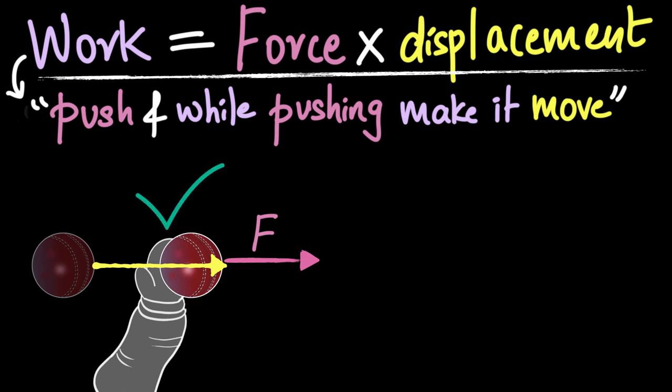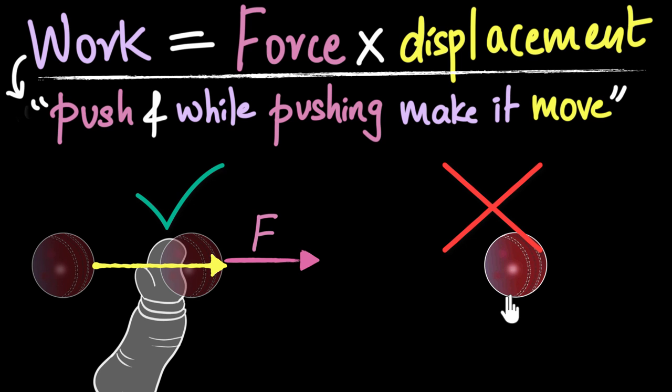But what happens once the ball gets thrown? Do you think now he's doing work on that ball? Think about this. What do you think? Well, once that ball is released, notice he's no longer pushing it. So yeah, the ball is moving. The ball is being displaced. But now, nobody's pushing on it, right? And so, now, no longer work is being done on that ball, because there is no force acting on that ball. Remember, we have to push it, and while pushing, make it move. So the astronaut only did work when that ball was in his hand. The moment the ball started moving away from his hand, no longer work is being done by that astronaut.